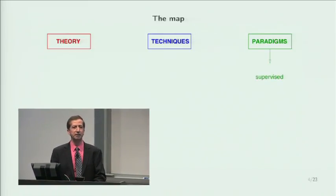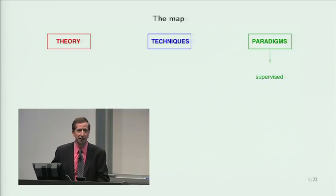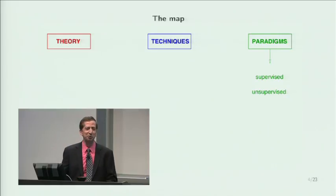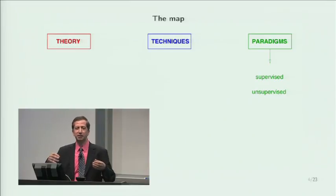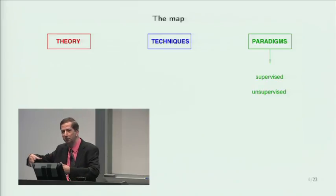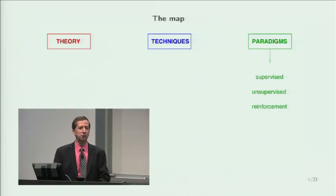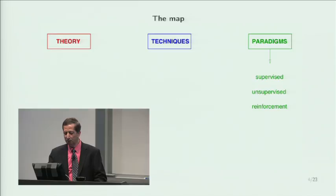We covered supervised learning — that was almost the exclusive topic of the course, and it is by far the most popular and most useful form of machine learning. If you cover just that, you are already very much ahead. The other topics are interesting and have applications, but definitely not in the league of supervised learning in terms of impact on practice. We touched on unsupervised learning with a single algorithm — we got the idea that clustering is the key, and indeed clustering is the key.